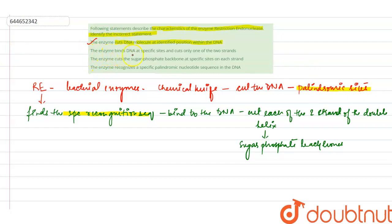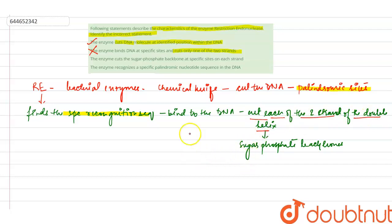The next statement says: the enzyme binds the DNA at specific sites and cuts only one of the two strands. This is wrong, because it cuts each of the two strands of the double helix at the sugar-phosphate backbone.